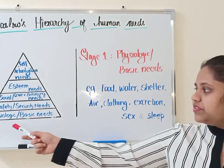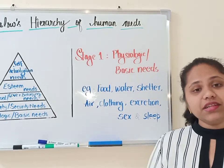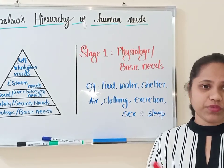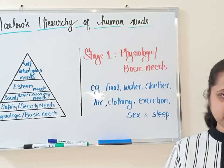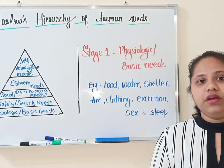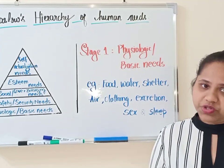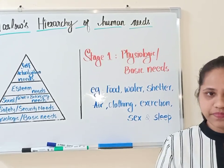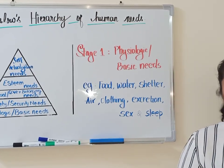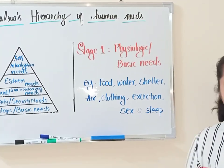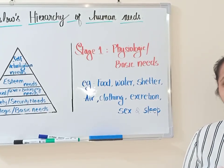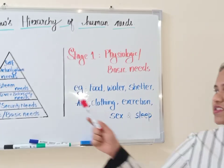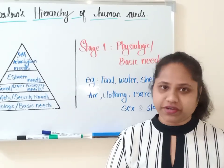The first stage is physiological or basic needs, otherwise called biological needs. Examples include the air that we breathe — without oxygen we cannot survive — food that we eat, water when we are thirsty, shelter to stay somewhere, clothes to wear, and sleep. All these are basic needs. If these needs are not fulfilled you cannot move further to the second aspect of the pyramid: safety or security needs.